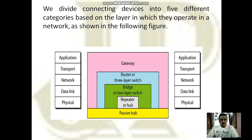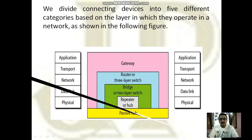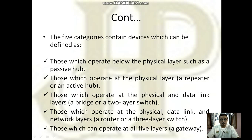Taking each of them separately: those which operate below the physical layer are passive hubs; those which operate at the physical layer are active hubs and repeaters; those which operate at the physical and data link layer are bridges, also known as two-layer switches; those which operate at the physical, data link, and network layer are routers or three-layer switches; and those which can operate at all five layers are known as gateways.